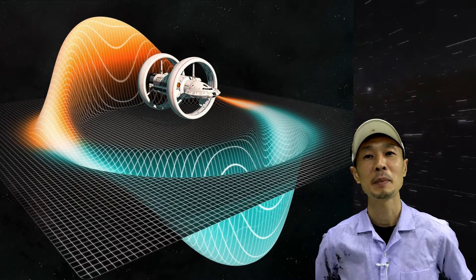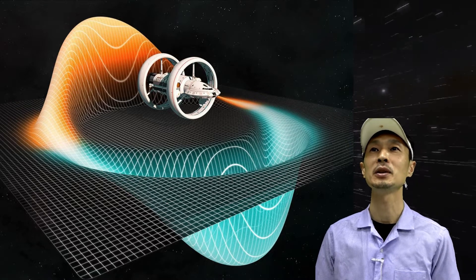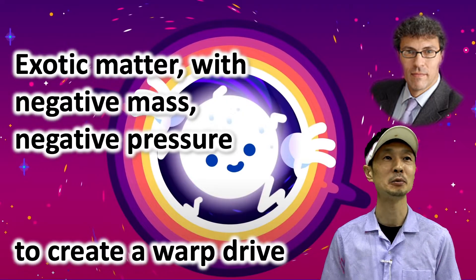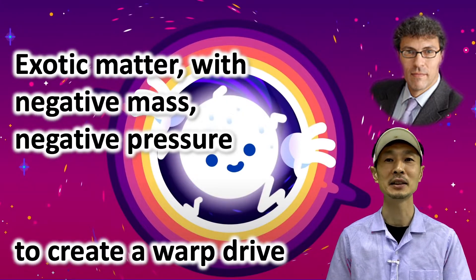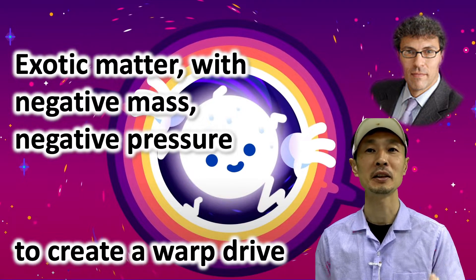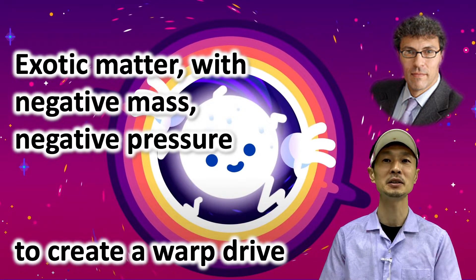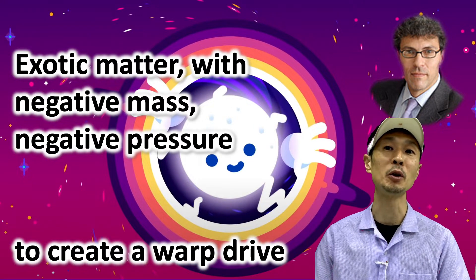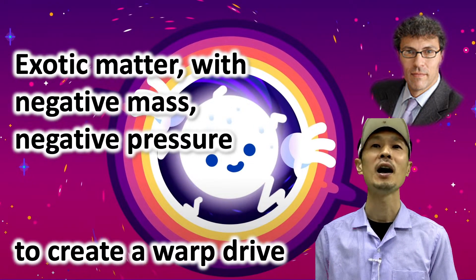To expand the space behind you, Alcubierre needed exotic matter with negative mass and negative pressure. If you can find something with negative mass, its gravity would be negative, creating a repulsive force to expand the space. However,